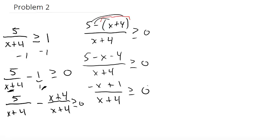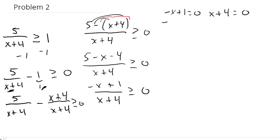Now working just like the first problem: set the numerator and denominator equal to 0. Negative x plus 1 equals 0 gives x equals 1. And x plus 4 equals 0 gives x equals negative 4.